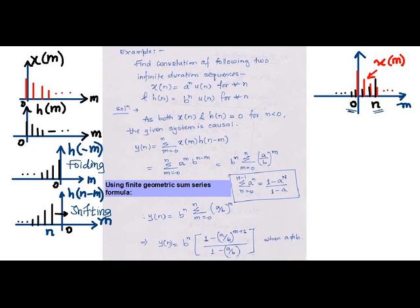Their starting point is at n equal to zero, which is why the given system is a causal system. We start by writing the convolution sum formula, where in the basic formula the lower and upper limits are minus infinity to plus infinity.